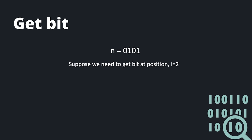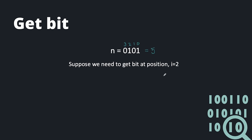What happens in get bit? Suppose I have written a number here — this is 5's binary form. Now what do I have to do here? I have given a particular position and I will tell you which bit is 0 or 1. If you see here, the positions are: this is 0, this is 1, this is 2, and this is 3.